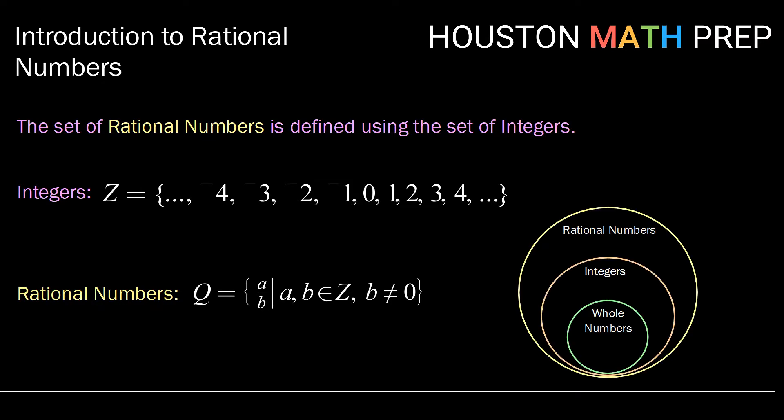where A and B are both integers and B just can't be zero. So if we think about the number sets that we already know, we know that